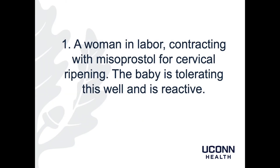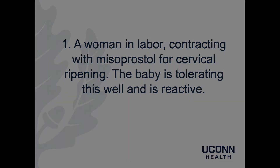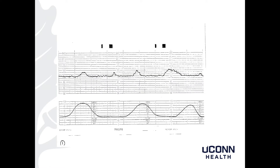Case 1 is a woman in labor contracting with misoprostol for cervical ripening. The baby is tolerating this well and is reactive. My read of this fetal heart rate tracing: baseline of 120s, moderate variability, accelerations are present, negative decelerations. That would make this a Category 1 fetal heart rate tracing.